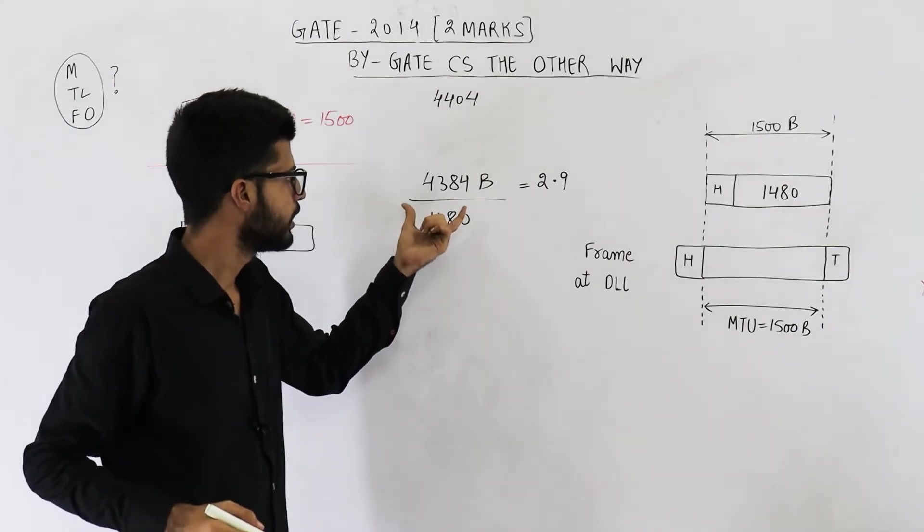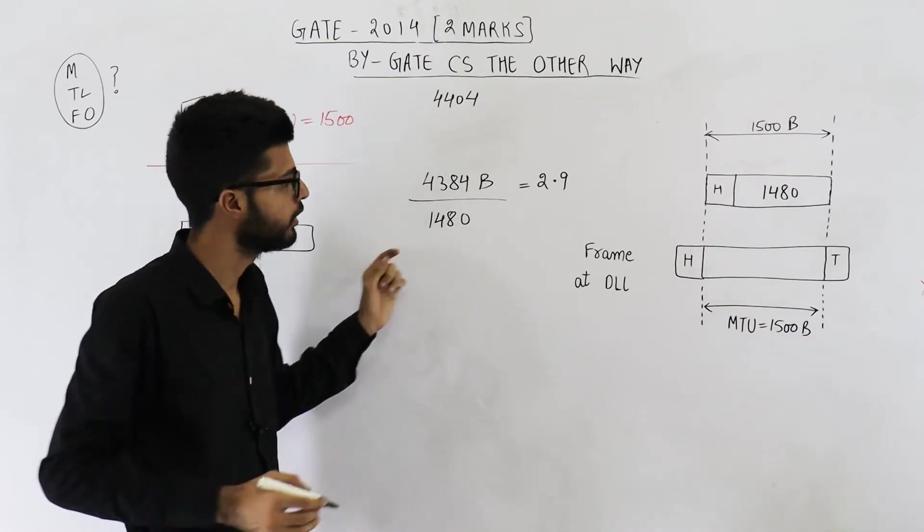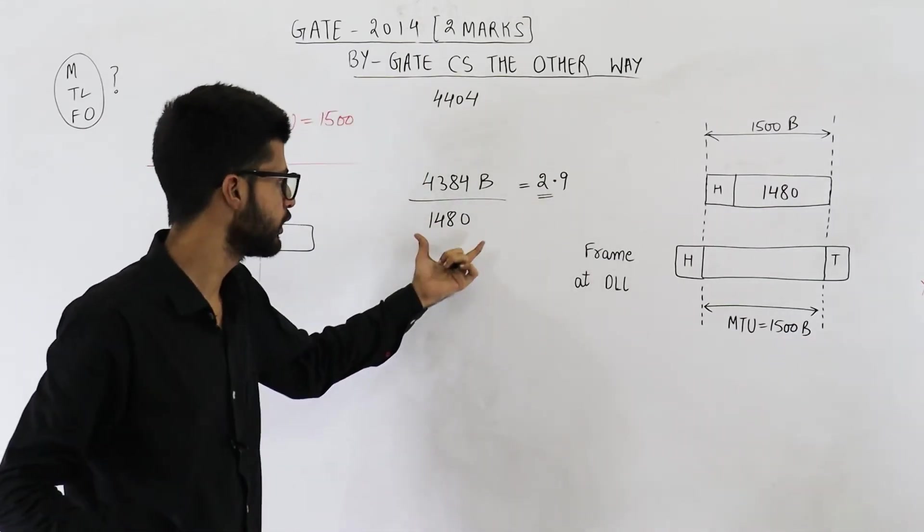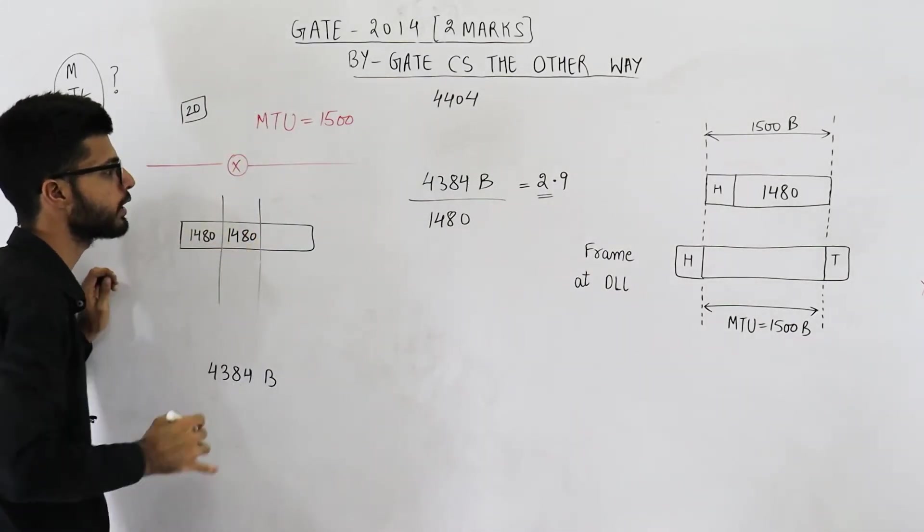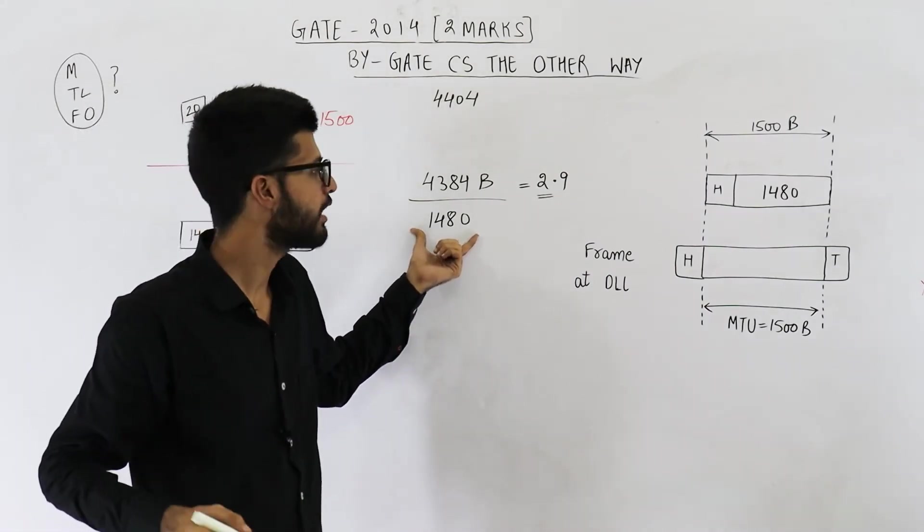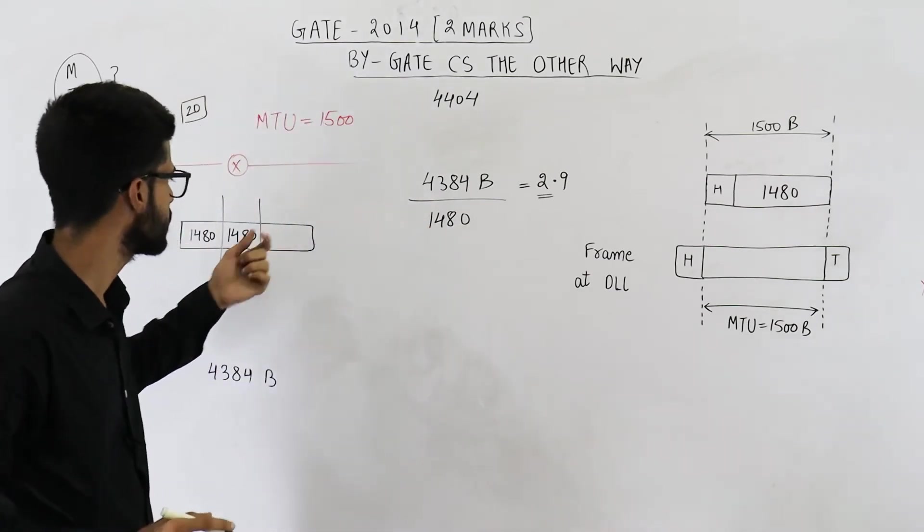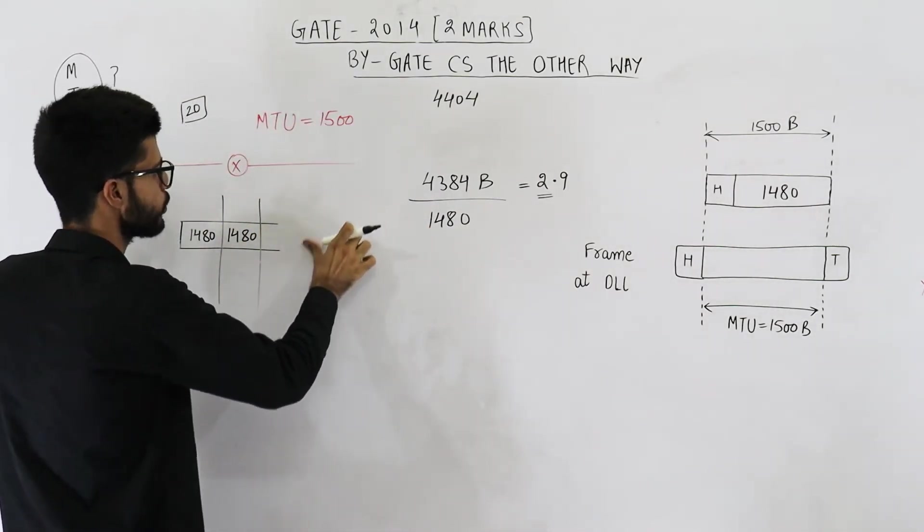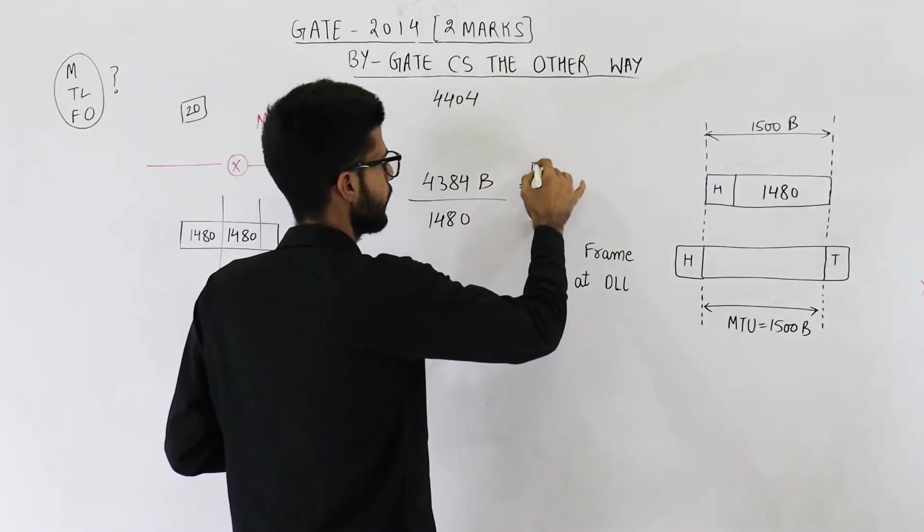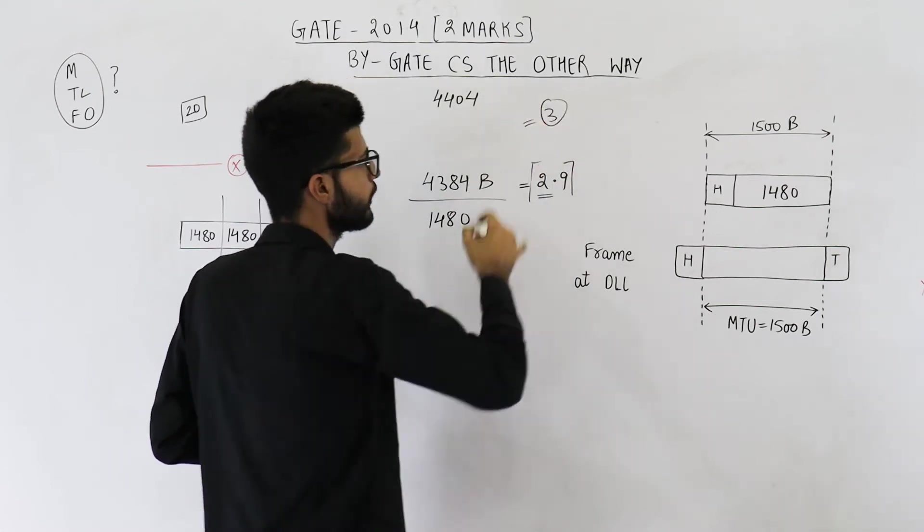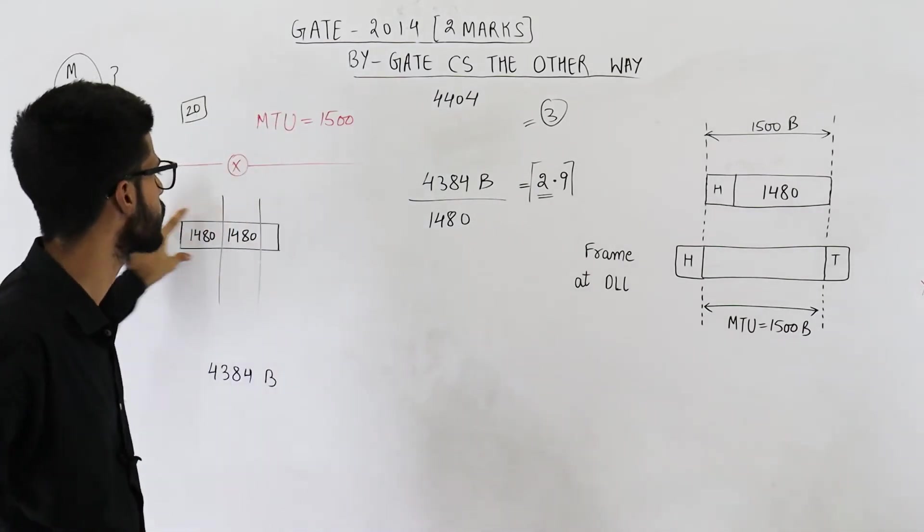That means if from this much data you try to create smaller parts of this size, two parts will be of complete 1480 bytes. That means first fragment will have 1480, second fragment will also have 1480, and third fragment will have only 0.9 of 1480, these many bytes. So this last fragment will actually be smaller than first two fragments. How many total fragments are there? Just take its ceiling. Total number of fragments are 3. That means the third fragment they are asking about is the last fragment that belongs to this datagram.